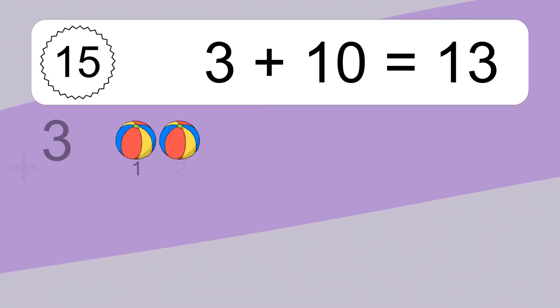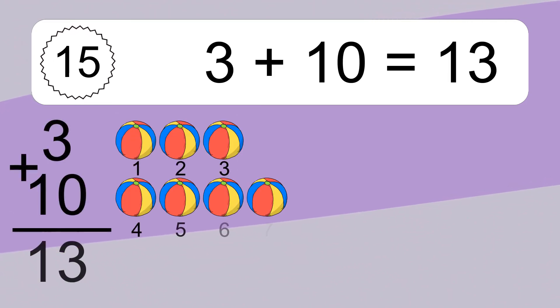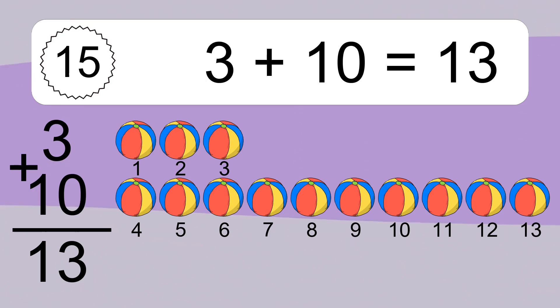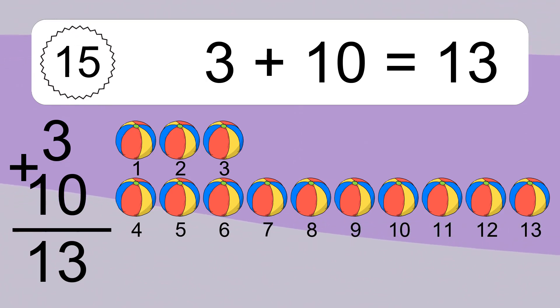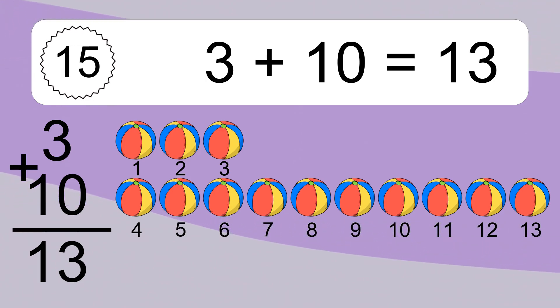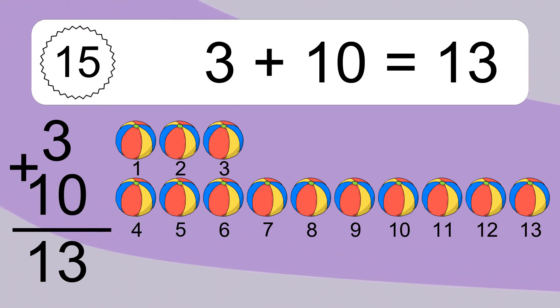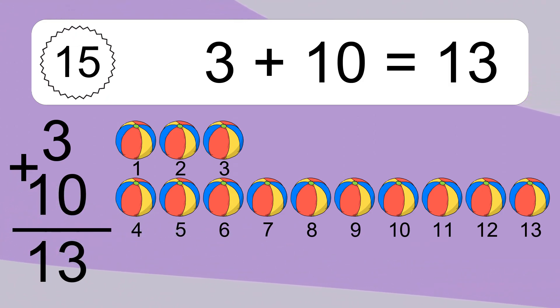3 plus 10 equals what? 3 plus 10 equals 13. Let's count it. 1, 2, 3, 4, 5, 6, 7, 8, 9, 10, 11, 12, 13.